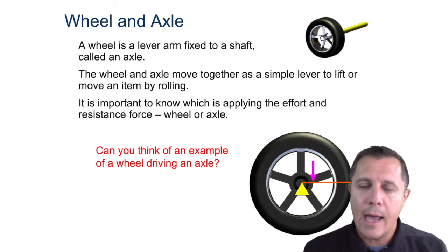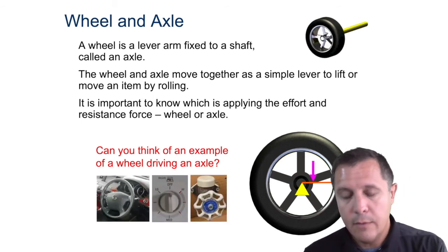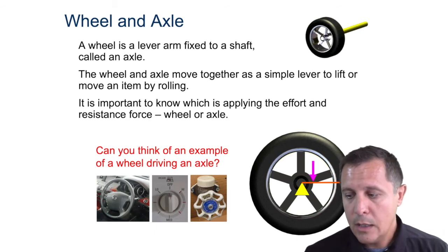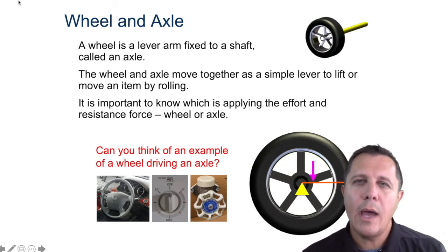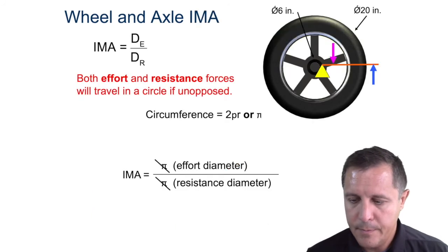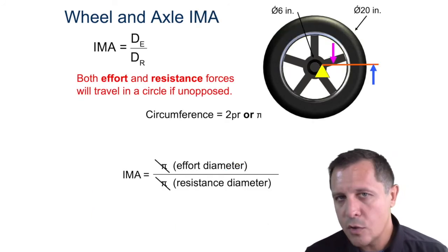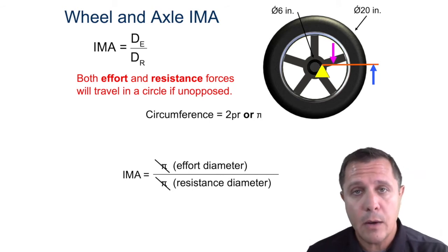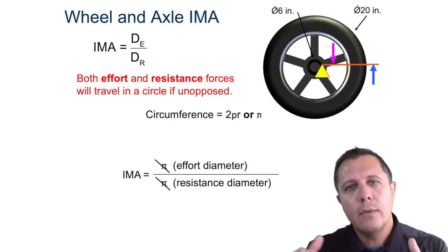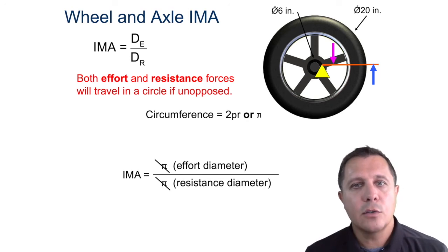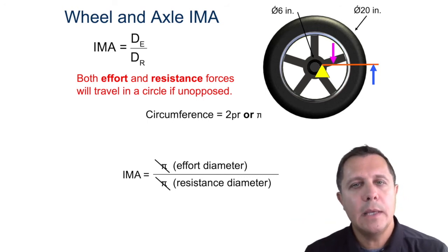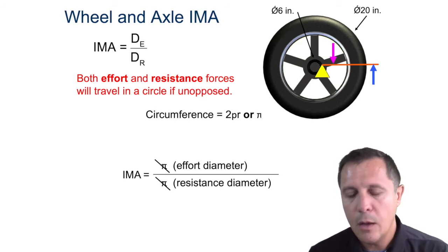Wheel driving axle would be like a steering wheel; axle driving wheel would be like your car. You have to be careful to know what's driving what to figure out your IMA in a problem. It's going to be just diameter — it always has to be effort divided by resistance. So if it's wheel driving axle, the effort is being put in with the bigger diameter; if it's axle driving wheel, the effort is being put in with the smaller diameter.